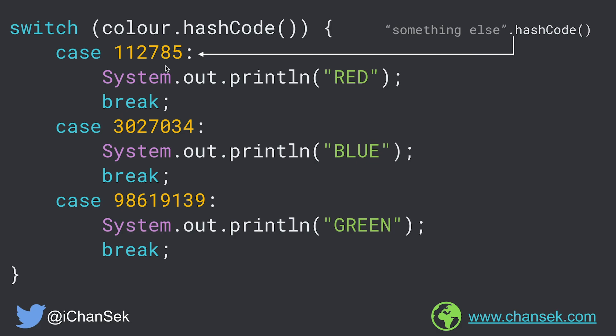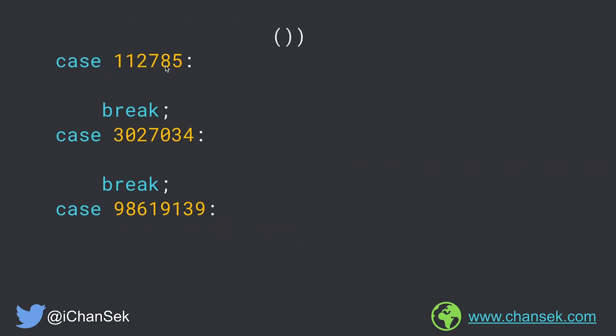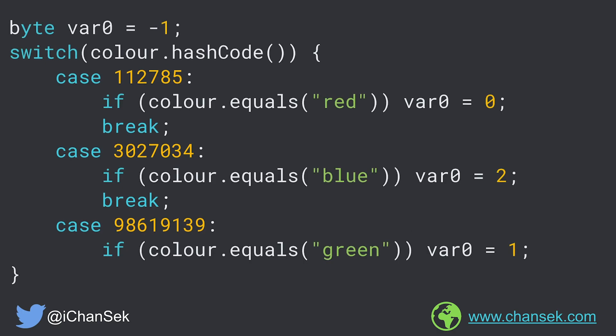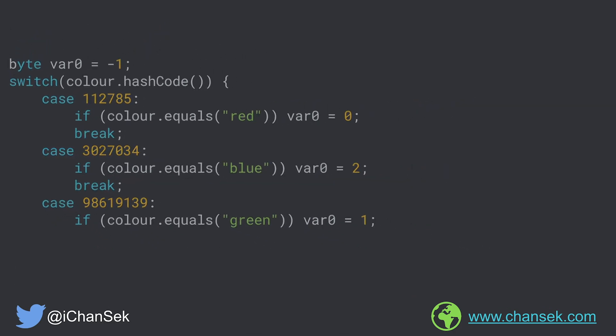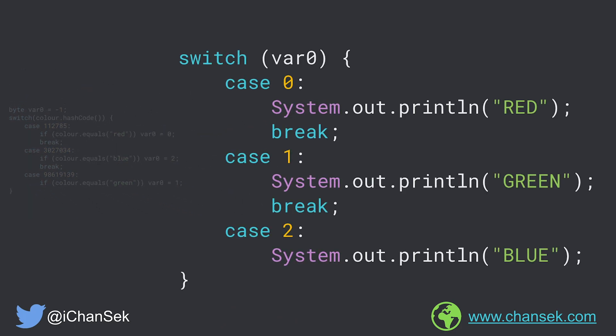To avoid this hash collision problem, what the compiler does is it adds one additional if condition in every case. Instead of placing our code directly inside the first switch statement, the compiler just initializes a variable called var0. Based upon this value, the compiler generates a second switch statement which has our actual code inside it. So if the var0 value is 0 then the code block for the red case is executed, if var0 is 1 then green, and if var0 is 2 then blue. The source code with a string switch is now converted into two switch statements instead.